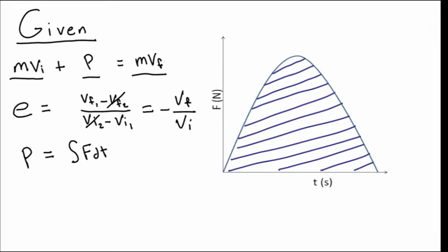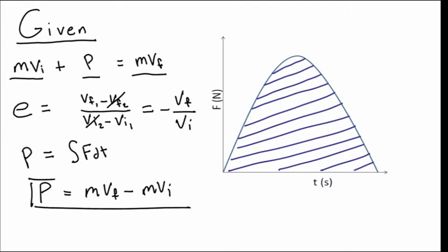And that is equal to our area of the graph that we have at the right. Now, if we want to solve for p in the first equation, we end up having p equal to our final momentum of the ball minus our initial momentum of the ball. And this is the equation we will be using later on in the explanation.